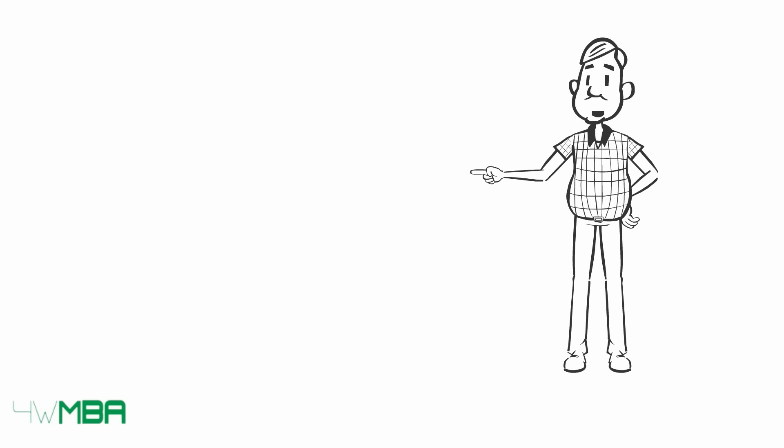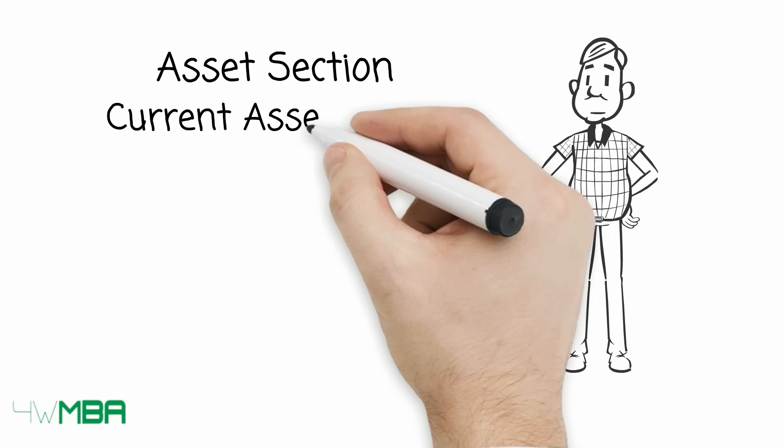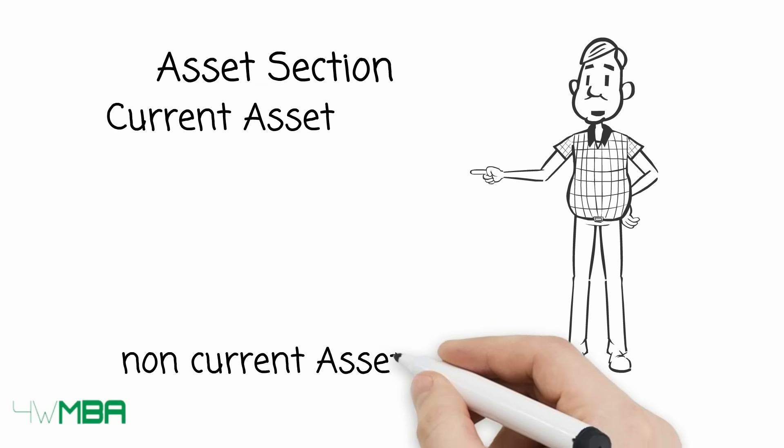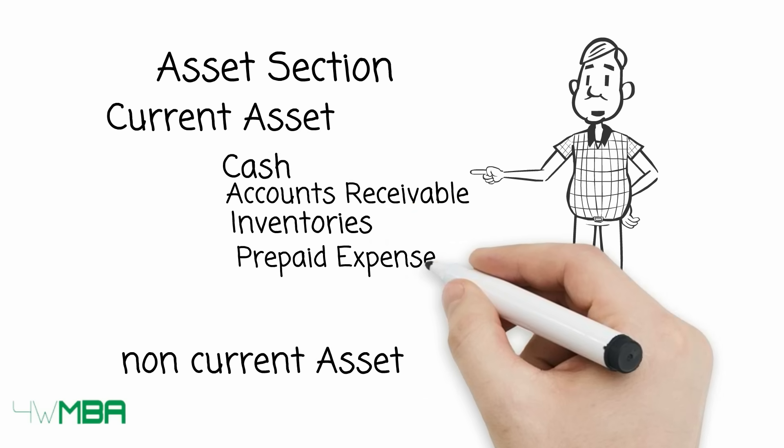More in detail, the asset section is comprised of current assets and non-current assets. Main current assets are cash, accounts receivable, inventories, and prepaid expenses.